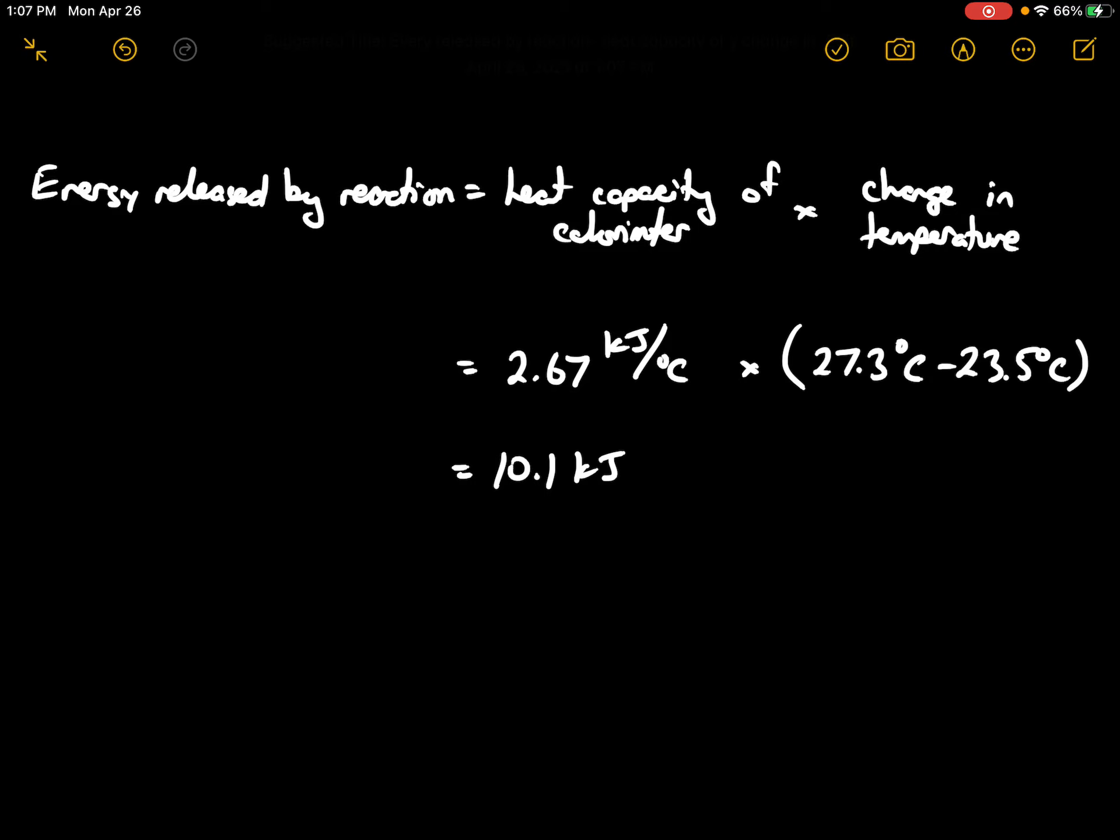So this is the energy released by the sample. This would have a negative sign here. So the enthalpy change for one gram of butter is equal to negative 10.1 kilojoules over 0.30 grams.